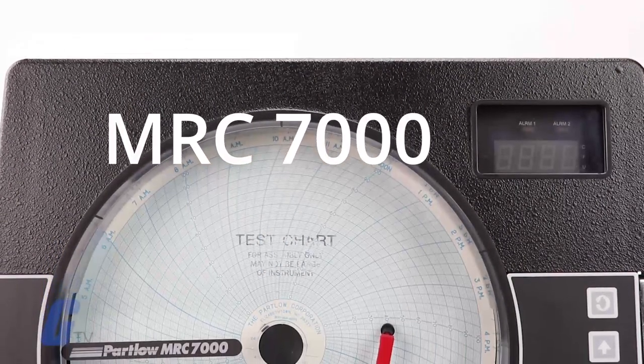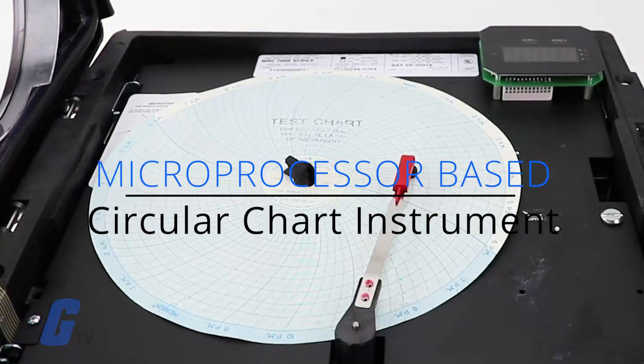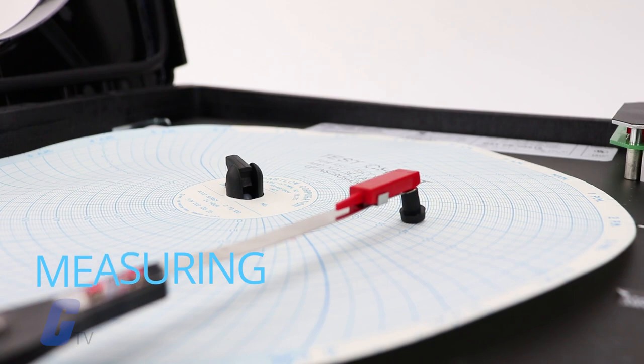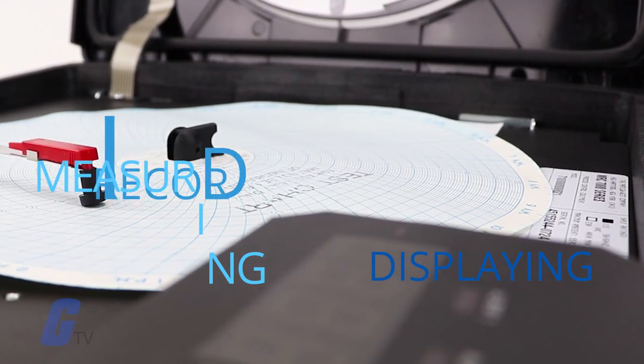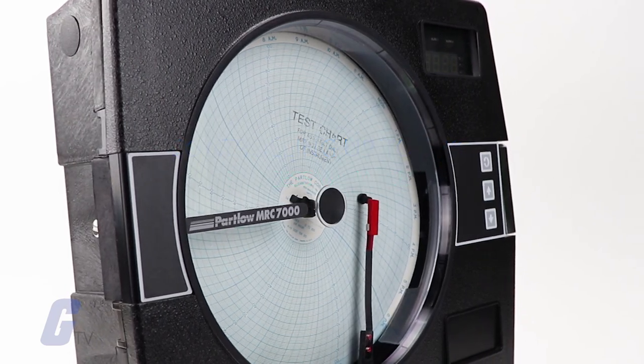The MRC-7000 from Partlow is a microprocessor-based circular chart instrument that is capable of measuring, displaying, recording, and controlling up to two process variables from a variety of inputs.